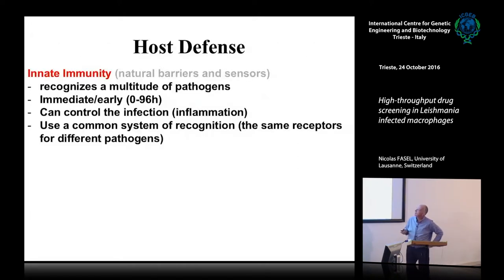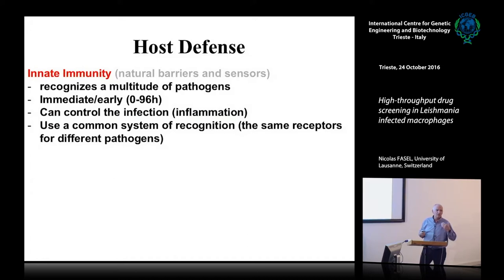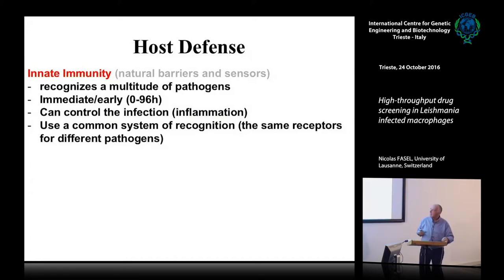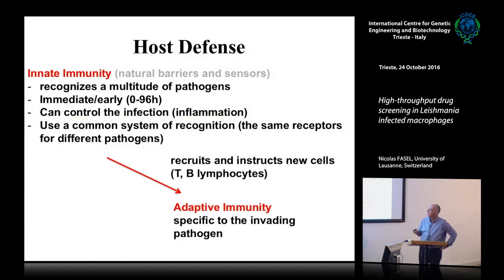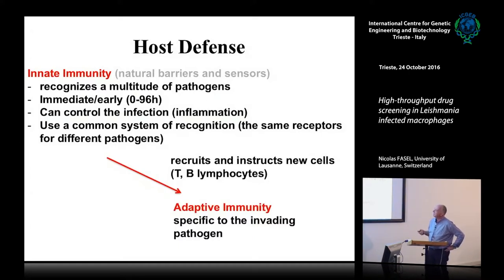Briefly, innate immunity is going to be the main topic of my talk. Innate immunity is very important in the very quick response — it occurs very quickly and it can control the infection, mainly through inflammation, and it uses a series of receptors which are common for all pathogens. Then you have recruitment and the adaptive immunity, with recruitment of T and B cells, and then it starts to be specific for the pathogen.